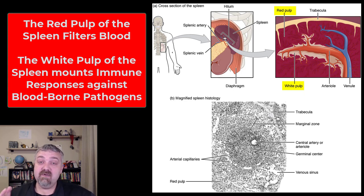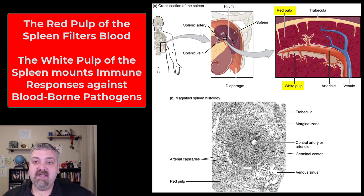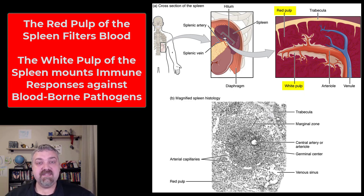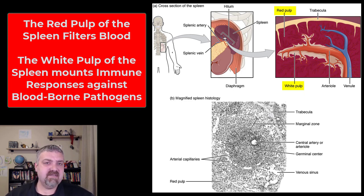So a huge chunk of the recycling of red blood cells is going to occur here in the red pulp of the spleen. Now, the other key thing about the red pulp is there are immune cells here, but they're primarily the cells that are involved in innate immunity, or non-specific immunity.